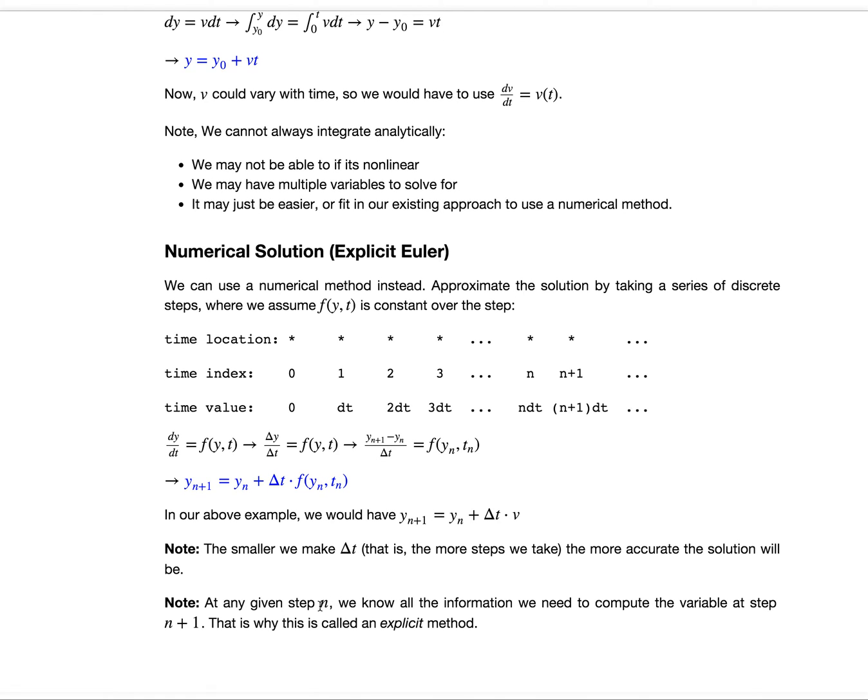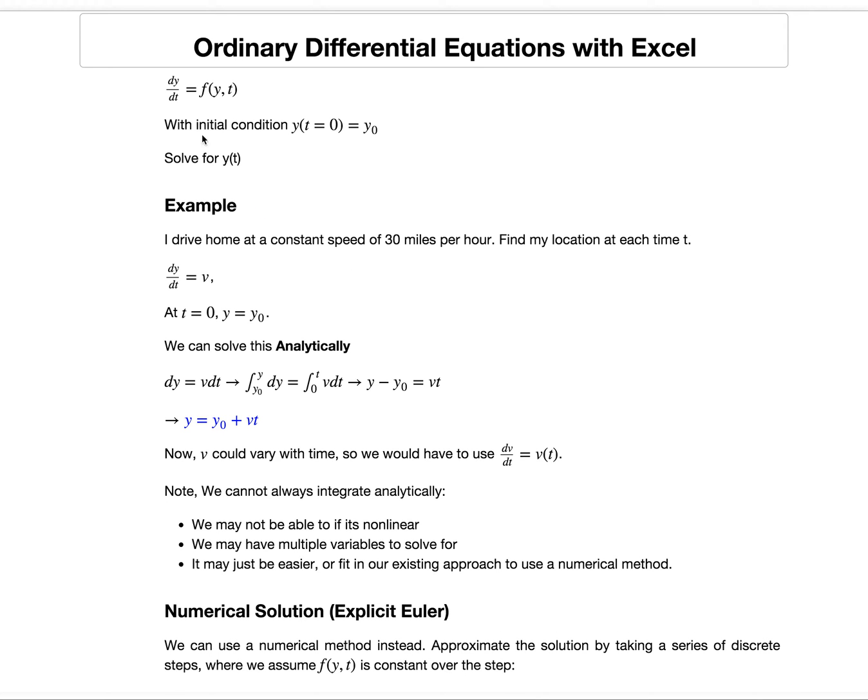At any given time step n, we know all the information we need to compute the variable at time step n plus 1. That's why we call this an explicit method. This is a really important point. At the very beginning, we know our initial condition. We know the value of y at t0, and that was from our initial condition, which gives us our starting point.